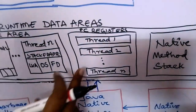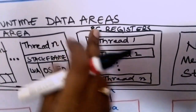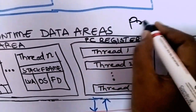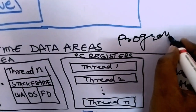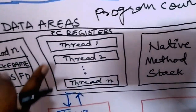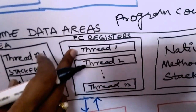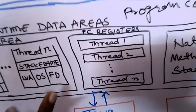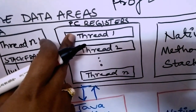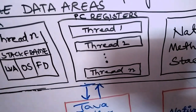The next memory area is PC registers — PC stands for program counter. For each and every thread there will be one PC register maintained. The current working instruction will be stored in the PC register.